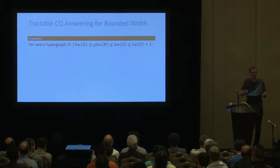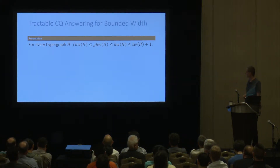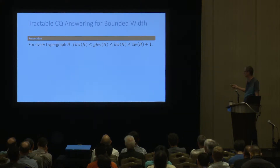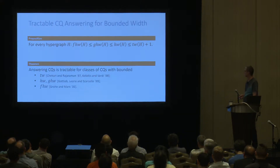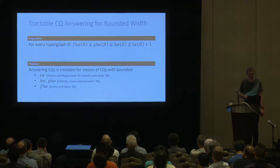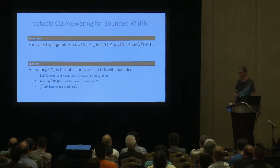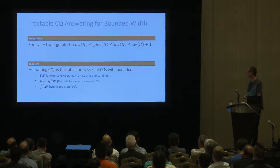By simply looking at the definitions of these various notions of width, this sequence of less-than-or-equal relationships for tree width, hypertree width, generalized hypertree width, and fractional hypertree width are immediate. And the use of these notions of width: it has been shown that if for a class of conjunctive queries any of these notions of width is bounded by a constant, then conjunctive query evaluation becomes tractable.